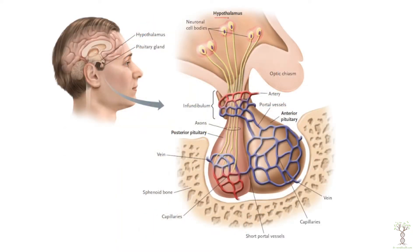The hypothalamus contains groups of cell bodies called nuclei. How the hypothalamus communicates with the posterior pituitary compared to the anterior pituitary is slightly different. There are axons that extend from the hypothalamus through the stalk region called the infundibulum, and the axon terminals are in the posterior pituitary gland.